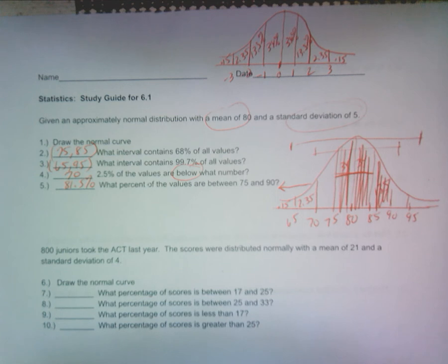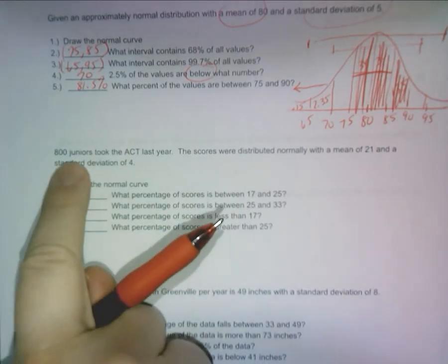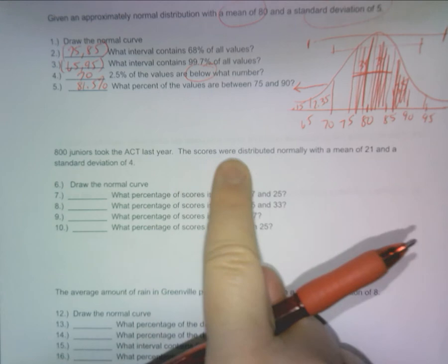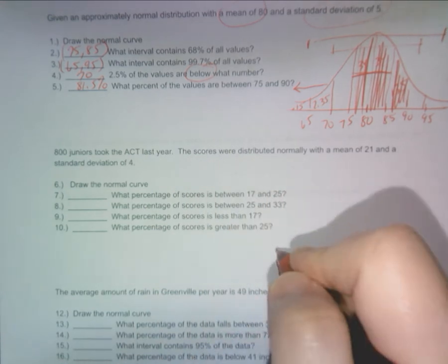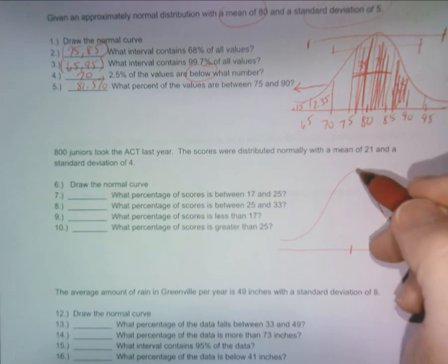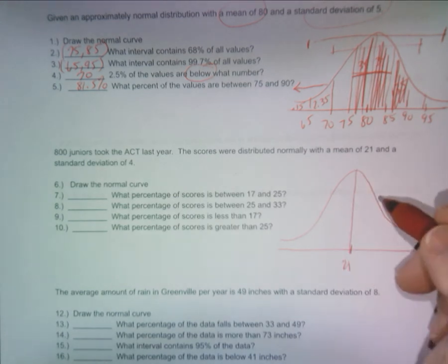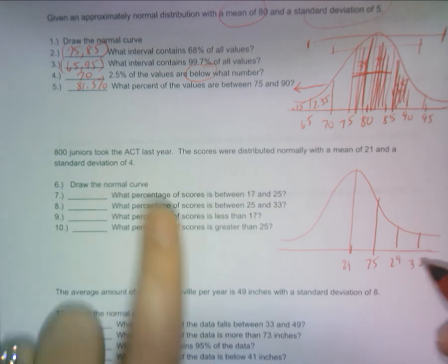Can you handle that question? You'll have one just like that. Same thing. All right, then next question, same exact concept. 800 juniors took the ACT last year. The scores were distributed normally with a mean of 21 and a standard deviation of 4. So again, you've got to draw it out. Got to put your mean here, got to add 4 every time, so 25, 29, 33. You only go up three.